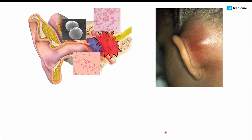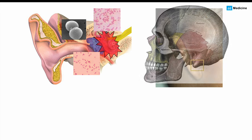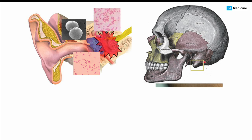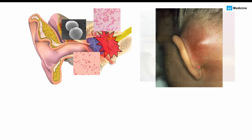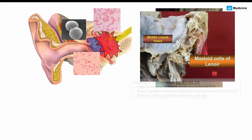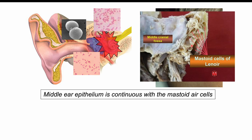Inflammation can occur in the middle ear and surrounding areas due to one or more of these bacterial species. The mastoid process is the bony protuberance behind the ear, and inside it we find the mastoid air cells, also called mastoid cells of Lenoir. The middle ear epithelium is continuous with the mastoid air cells, so if there is inflammation and infection in the middle ear, it can in some cases spread continuously into the mastoid air cells, resulting in mastoiditis.